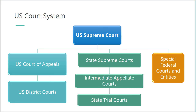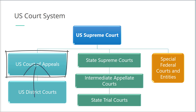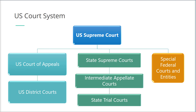Three territories of the United States — the Virgin Islands, Guam, and the Northern Mariana Islands — also have district courts. District court decisions can be appealed to one of the U.S. Courts of Appeal. These courts are divided into 13 circuits, and each hears appeals from the district courts within its borders, or in some instances from other designated federal courts and administrative agencies.